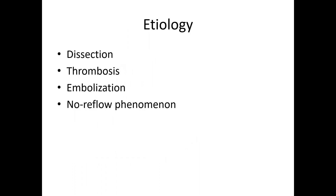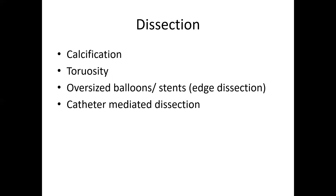The etiologies range between dissection, thrombosis, embolization, and no-reflow phenomena — these are the biggest categories we encounter when thinking about acute vessel closure. Dissection can result in acute vessel closure and is mostly related to calcification of the vessel. Tortuosity can be a significant factor when trying to wire very tortuous lesions, and oversized balloons and stents can result in edge dissection that can propagate.